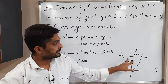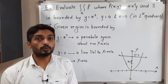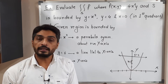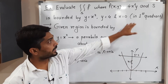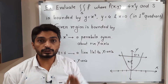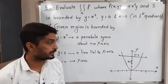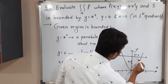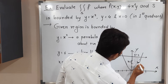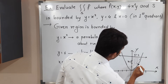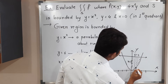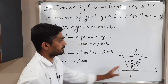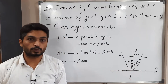These two regions are bounded by the parabola, the line, and the y-axis. But it is mentioned in brackets that the region lies in the first quadrant only. That means this is the region of integration — we consider only the region in the first quadrant and not the region in the second quadrant.